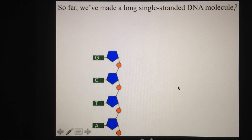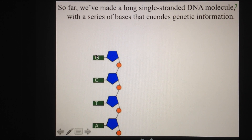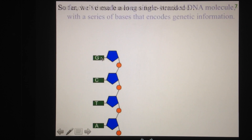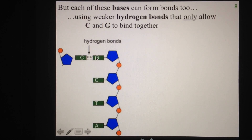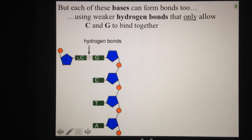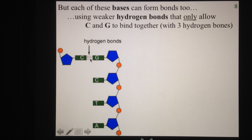So far we've made a long single-stranded DNA molecule that has bases encoding genetic information sticking out on one side. These bases can actually form bonds as well. Using a weaker type of bond called hydrogen bonds, we can join one base with another base. These hydrogen bonds are very specific and only allow cytosine and guanine to join together, with three specific hydrogen bonds in specific locations — so they can't bind with T or with A.